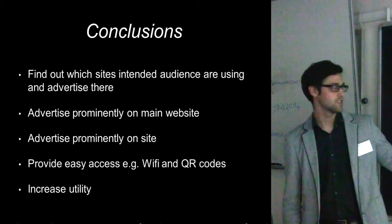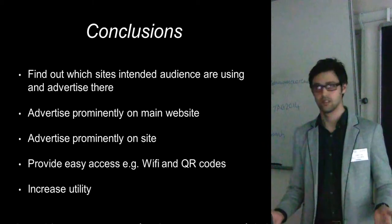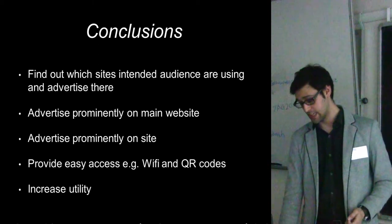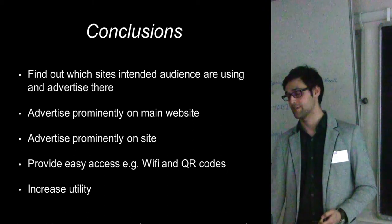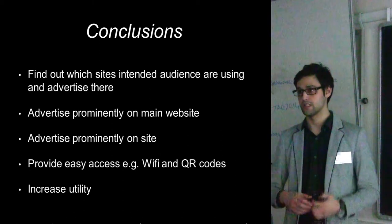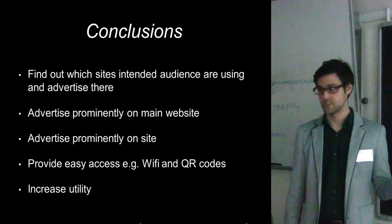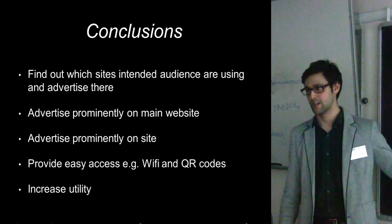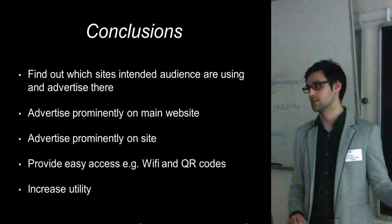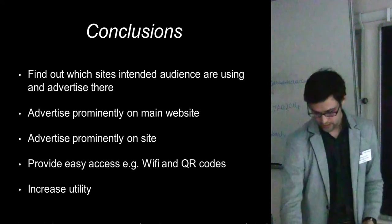My final conclusions: First, find out which social media sites your users are on — if they're on Facebook and you're only advertising on Twitter, nobody will download your apps. Second, advertise prominently on the main website; when I was doing my research, the app was only being advertised at the ticket purchase point with a small link to the app store. Third, advertise prominently on-site, but that needs to go hand-in-hand with access to Wi-Fi and QR codes or easy access codes. Finally, increase the utility of apps — multiple sites, multiple uses — give people a reason to use the app regularly, not just once when they visit the site.